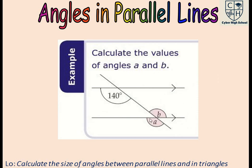Now let's look at an example. What is the value of a? Pause the video, give an answer, and justify your reason. a is equal to 140 degrees because they are corresponding angles. b is equal to 140 degrees because it is vertically opposite to a. It is also worth noting that b is 140 degrees because it is an alternate angle with the given 140 degrees — either reason is correct.